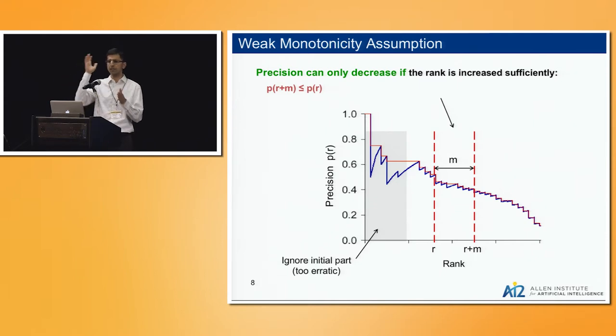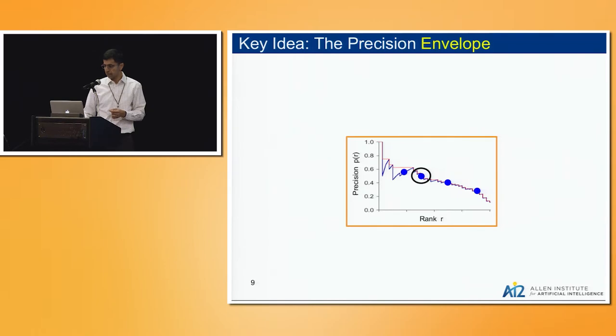After that initial gray point, this monotonicity assumption says that if you look at two points that are far apart, in this case parameterized by m, if m is the parameter of the monotonicity, if they're at least m apart, then the precision can only go down. So you cannot go up. That's the property of your model. You expect confidence going down, leading to precision going down as well.